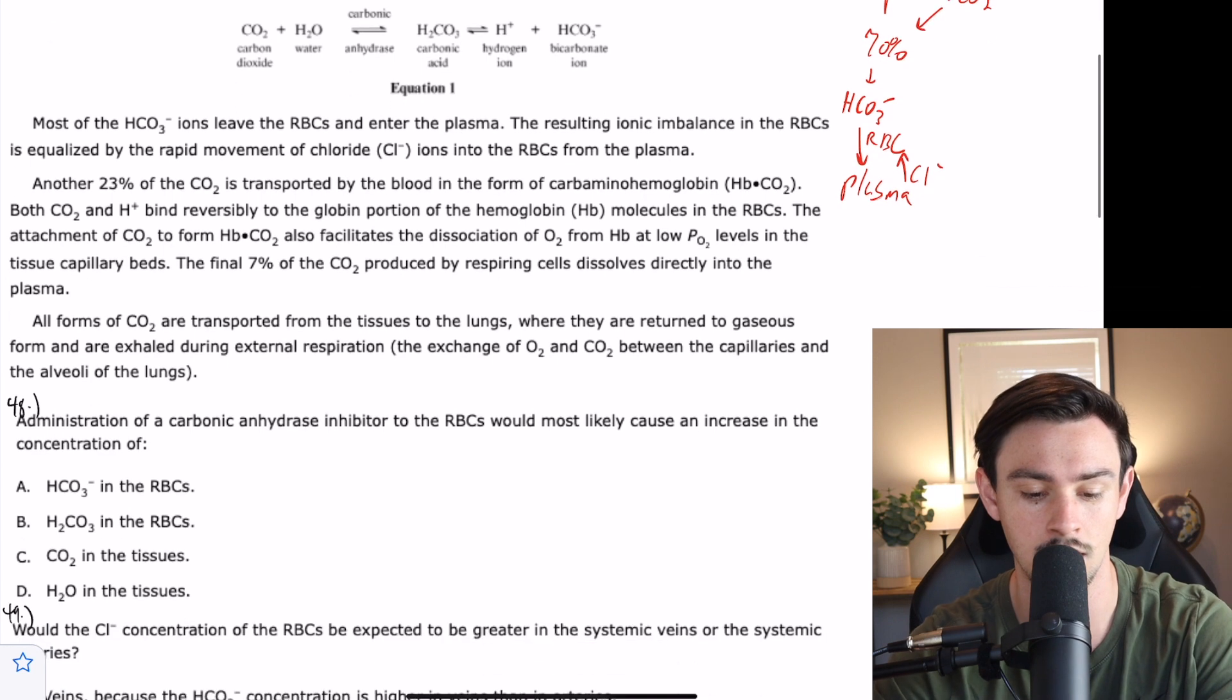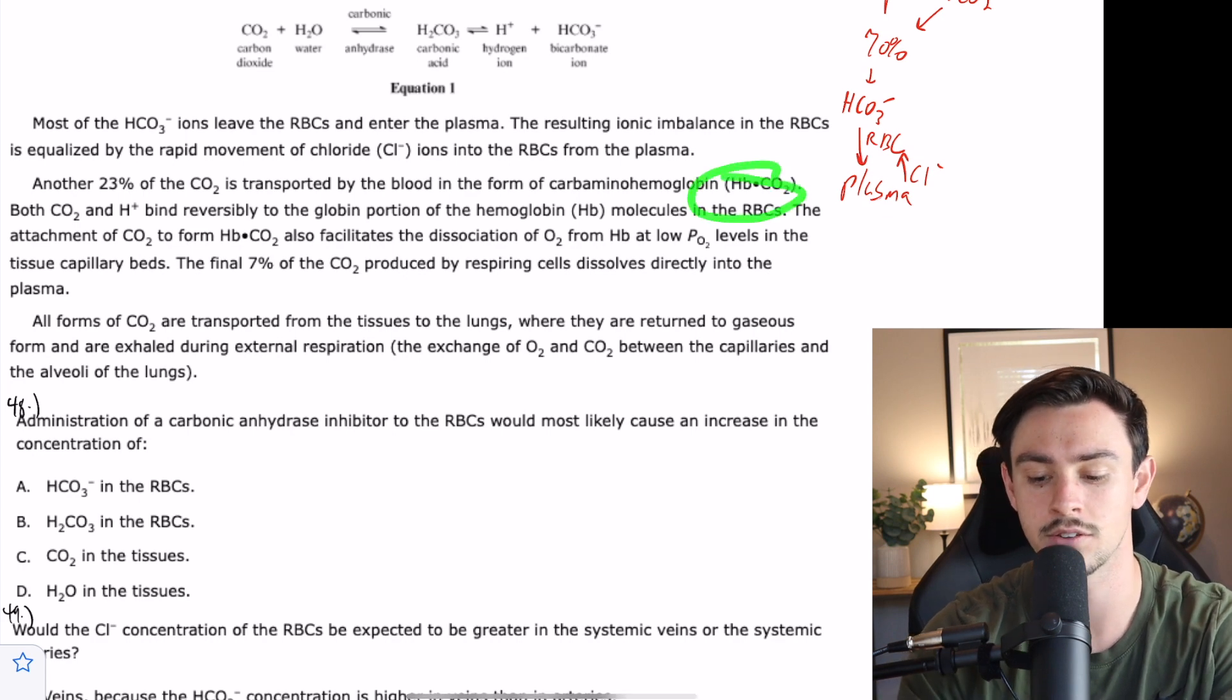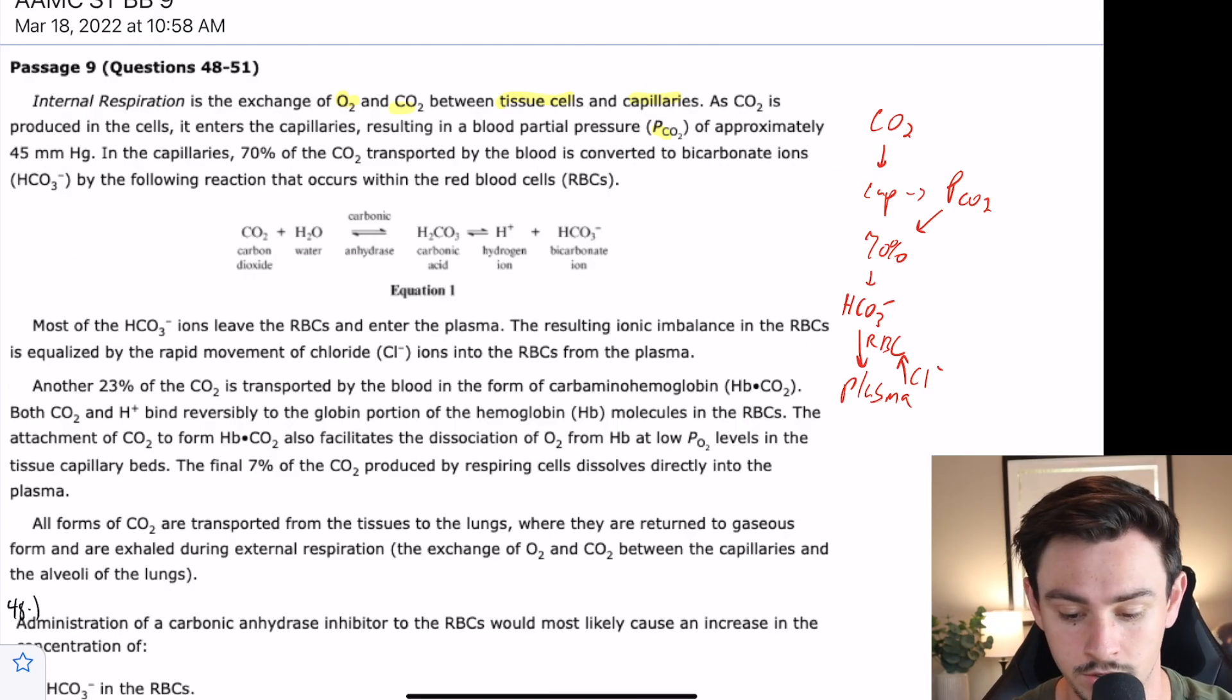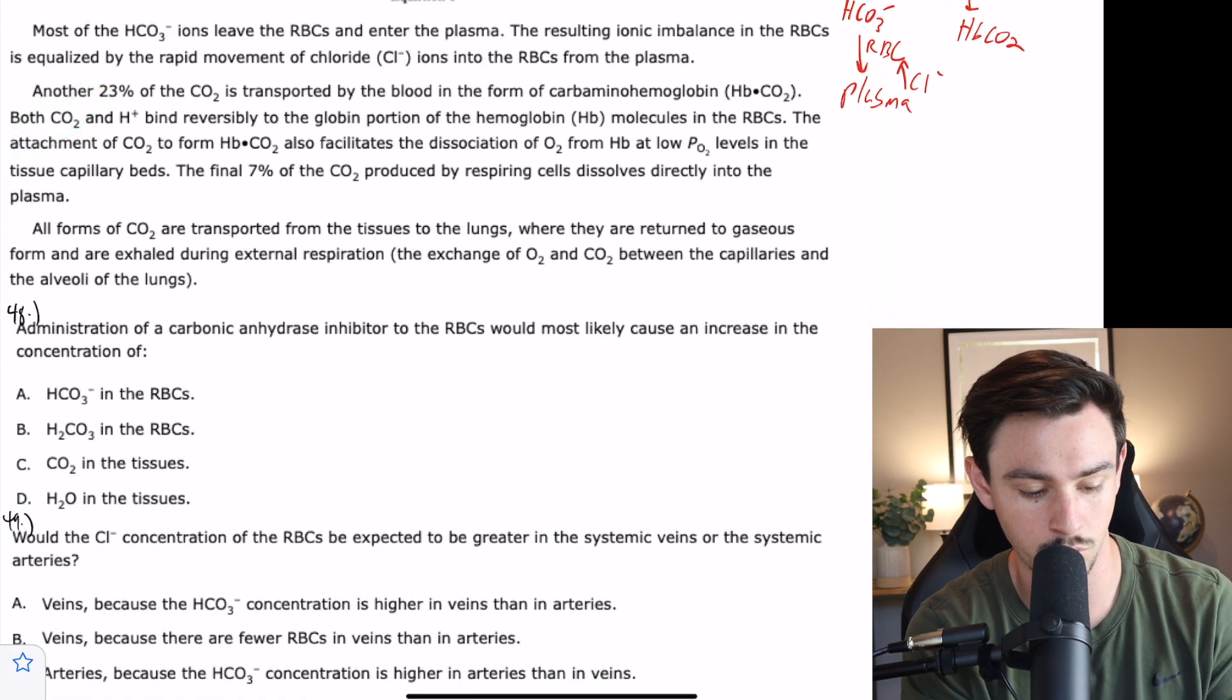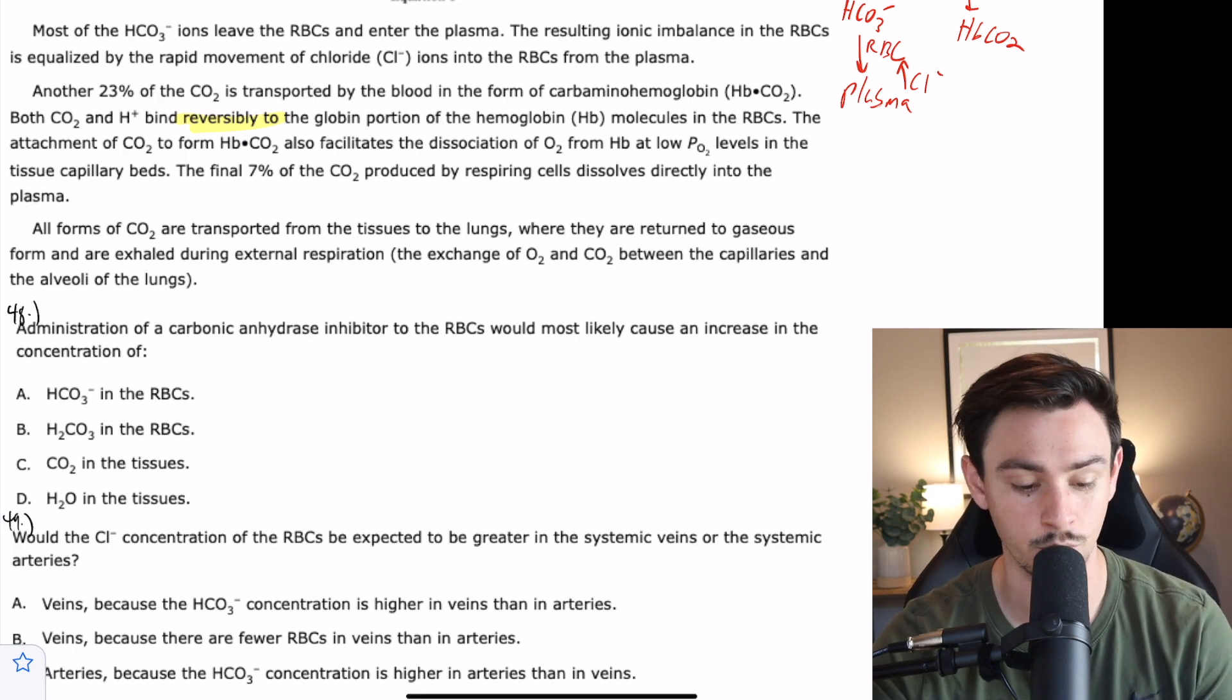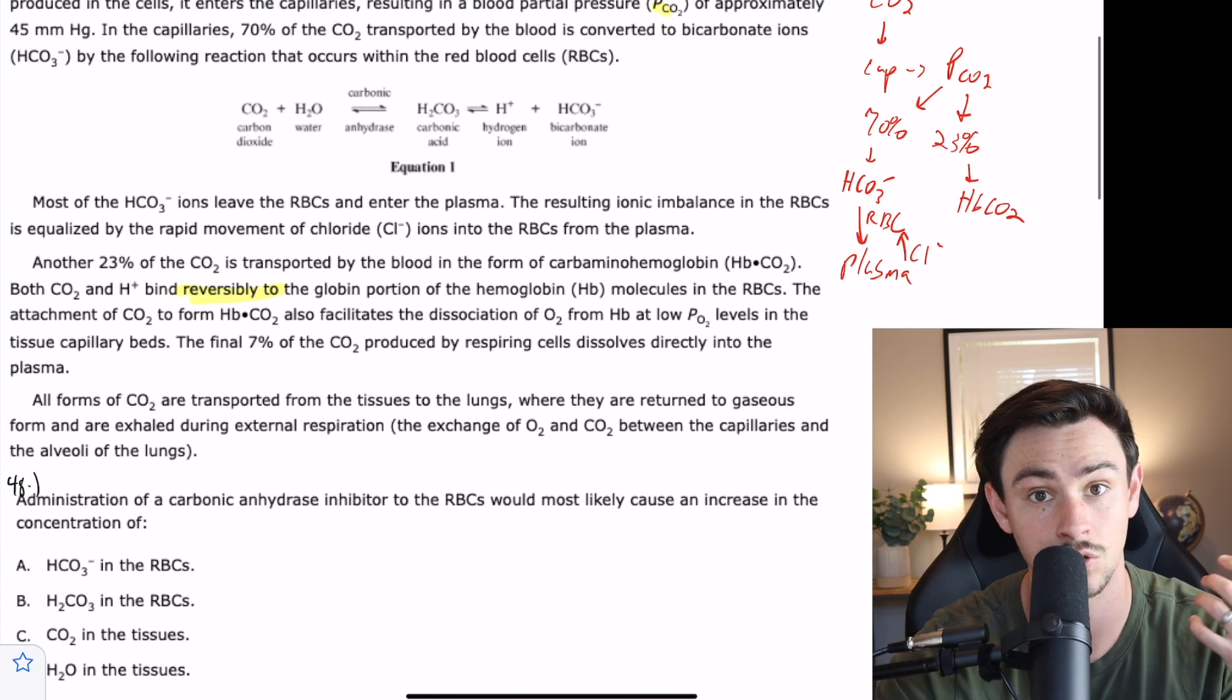Another 23% of the CO2 is transported by the blood in the form of carbaminohemoglobin, which means that carbon dioxide is bound to hemoglobin. Both CO2 and hydrogen ions bind reversibly to the globin part of the hemoglobin molecules in the red blood cells. So that means that even though they're going to bind, they can still leave.